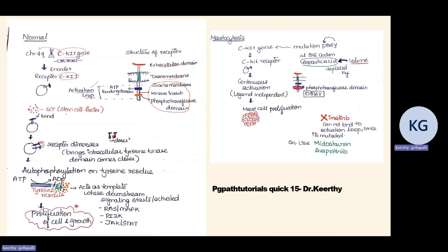Normally, stem cell factor binds to the C-kit receptor, causing receptor dimerization, which leads to intracellular tyrosine kinase activation. Once dimerization happens, the receptors come closer, leading to autophosphorylation of the tyrosine residue. This utilizes ATP to ADP at that tyrosine residue, activating secondary messengers in the cytoplasm, activating the RAS, PI3K, and JAK2 pathways, leading to proliferation and cell division.